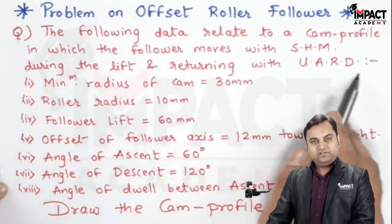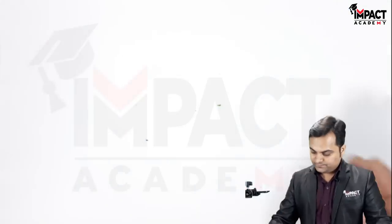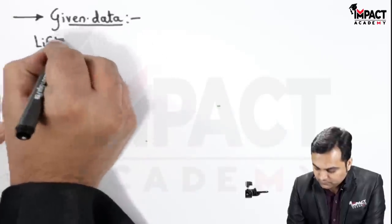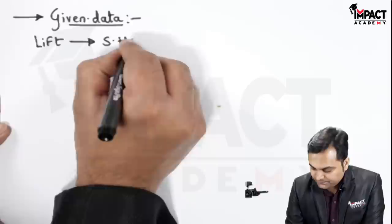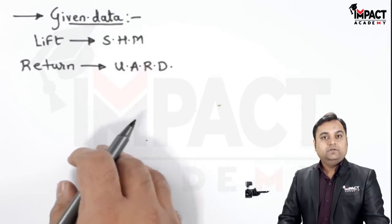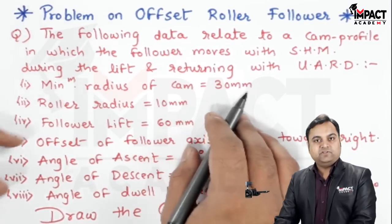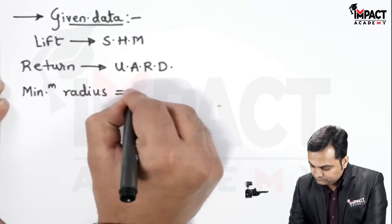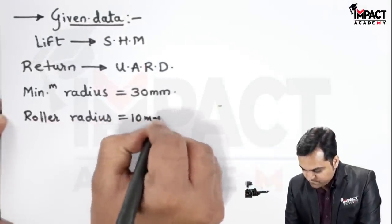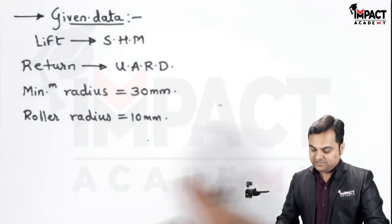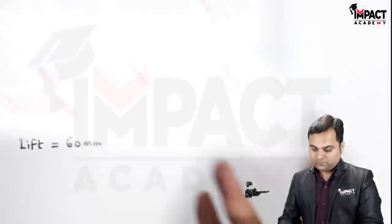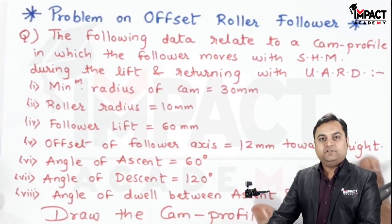So at first: lift is with SHM, return with UARD. Minimum radius of cam is 30 mm, roller radius is 10 mm, follower lift is 60 mm — that is the height covered by the follower or the maximum displacement. Offset of follower axis is 12 mm towards the right, so the offset distance is given.